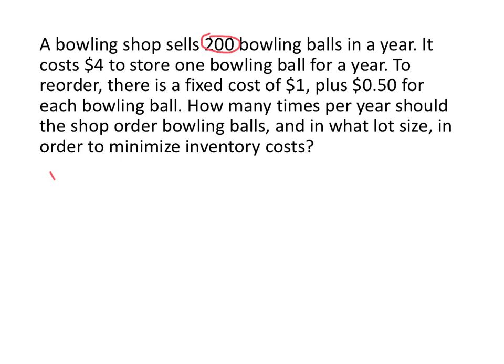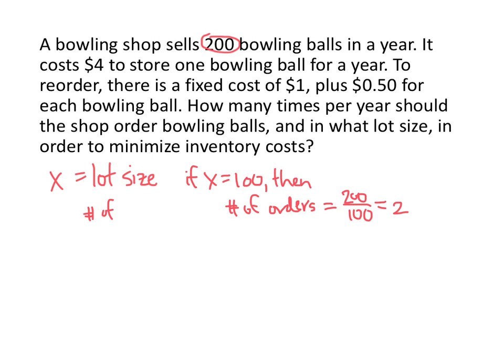So that variable that I'm talking about, the lot size, is what we're calling x. So x is the lot size and that's the size of the order, the number of bowling balls we order every time we order bowling balls. For example, if x equals 100, if we order 100 bowling balls each time, then the number of orders is going to be 200 divided by 100, which is 2. In general, the number of orders, the number of times we have to place an order, is going to be the total amount that we sell in a year divided by x. In this case that's 200 divided by x. So those are going to be the two numbers that are going to determine my cost function.